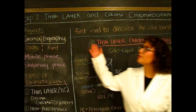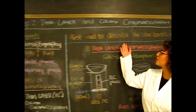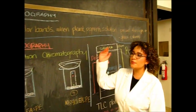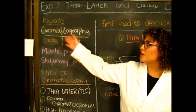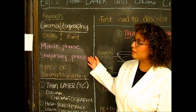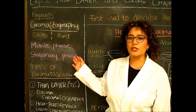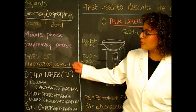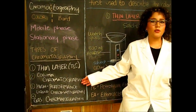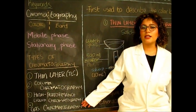For experiment two we're going to be performing thin layer and column chromatography. Thin layer chromatography was first used to describe thin color bands when plant pigment solution passed through a glass column. Key terms include chromatography, which can be broken down into color bands, mobile phase, and stationary phase. Mobile phase refers to the solvent and stationary phase refers to our TLC plate. There's different types of chromatography: thin layer that we will be performing today, column chromatography that we will be performing next, high performance liquid chromatography and gas chromatography that we will be performing later in the semester.